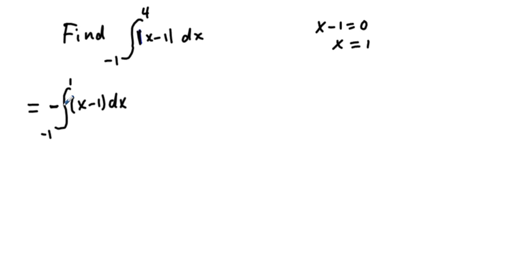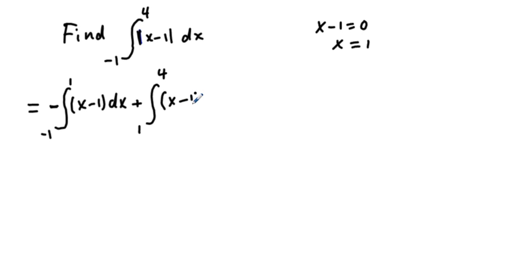Instead of putting a negative sign out front, we could swap the limits from 1 down to negative 1. Then to the right of 1, we have the integral from 1 to 4 of quantity x minus 1 dx. We can work this all out using the principles of integration to find the answer.